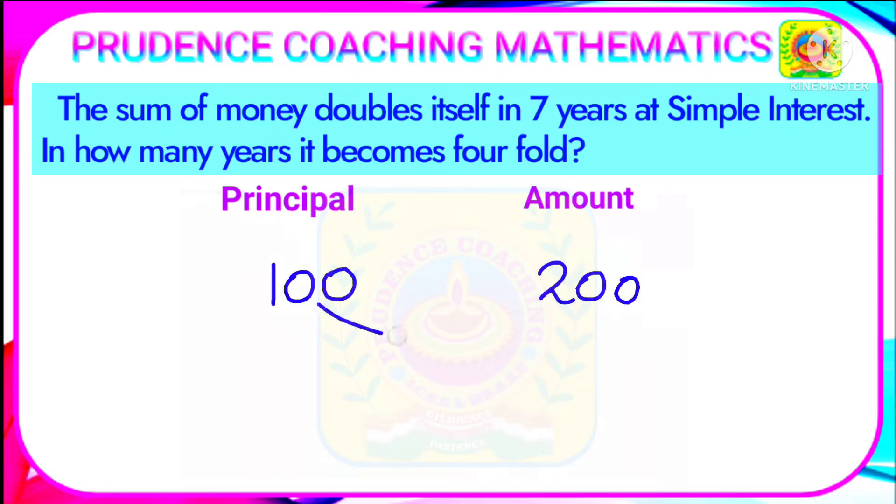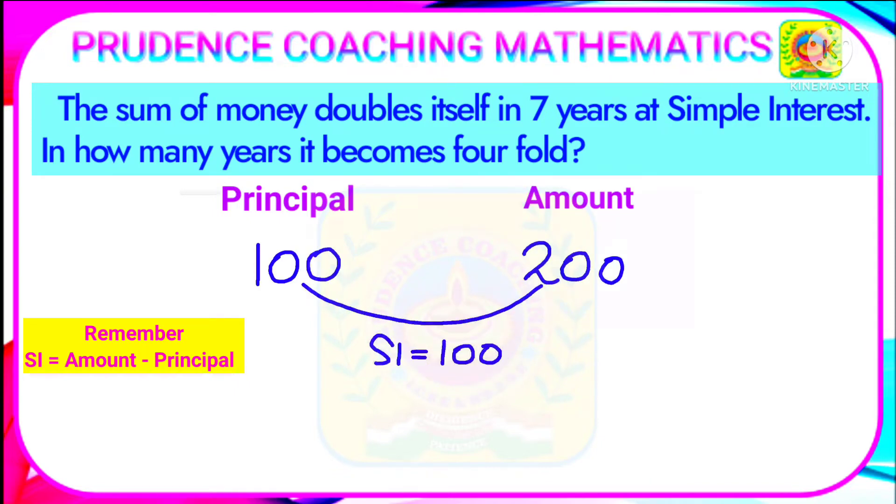Principal is hundred and amount is two hundred, so two hundred minus hundred, that is the SI. So simple interest is rupees hundred according to our assumption, and you are getting this SI, that is simple interest hundred, in seven years.